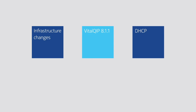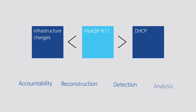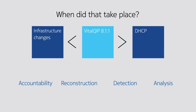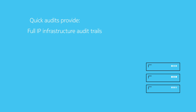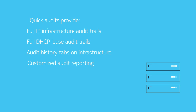The Vital QIP 8.1.1 update makes security and compliance objectives easier to achieve. Questions such as who did what and when can easily be answered with the new functionality, including reconstruction of events with individual accountability and intrusion detection. Quick audits provide a rolling window of the last thousand actions in the global audit trail.